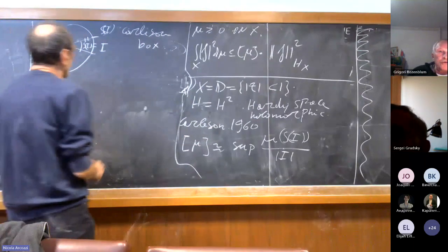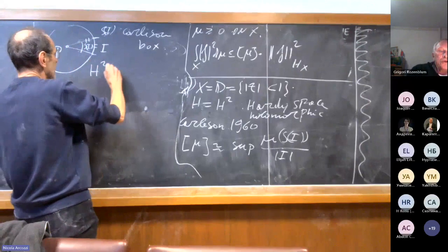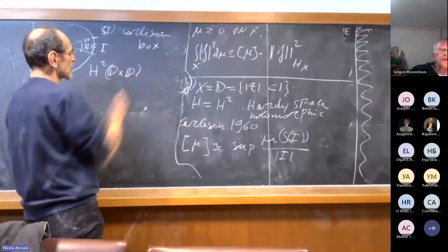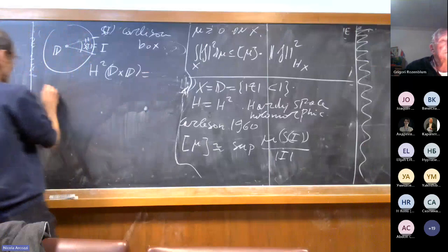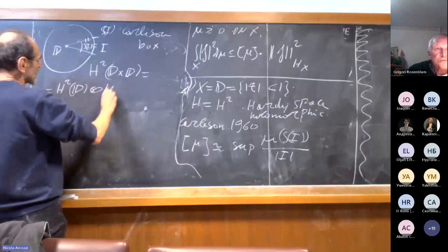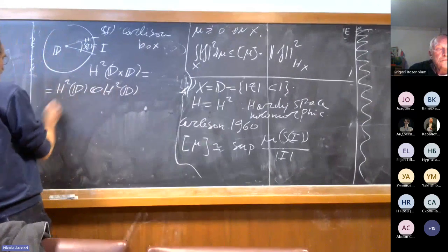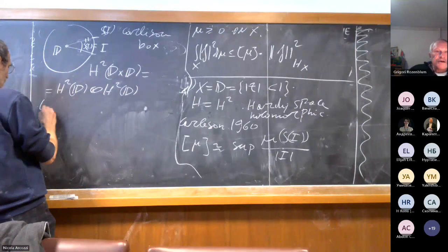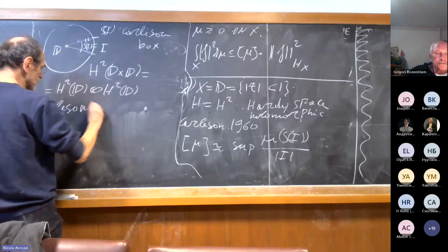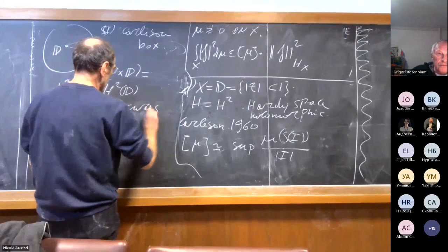If you consider the Hardy space H² on the bidisc - the product of two disks, which you can think of in abstract terms as the tensor product of H² with itself - then the characterization of Carleson measures is not known.